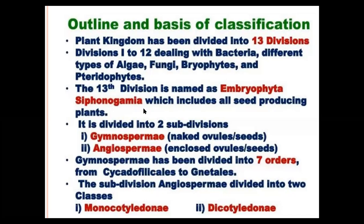Siphonogamma means the pollen tube is used compulsorily during fertilization. The pollen tube is also called siphon. The siphon is developed during fertilization and carries male gametes from the pollen grain to the female reproductive organ. So these plants are called Siphonogamma — all seed plants classified under the 13th division.